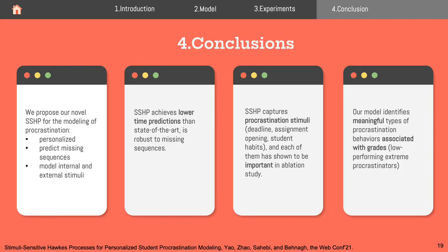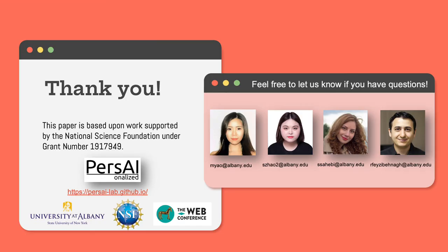To conclude, we propose a novel model for procrastination modeling that is personalized, can predict missing sequences, and captures both internal and external stimuli. Our model achieves lower time prediction error than state-of-the-art and is robust to missing sequences. Our model captures procrastination stimuli, each shown to be important in the ablation study, and identifies meaningful types of procrastination behaviors associated with student grades. Thank you for listening — feel free to check our GitHub page and reach out with any questions.